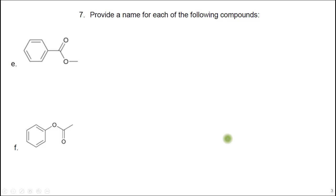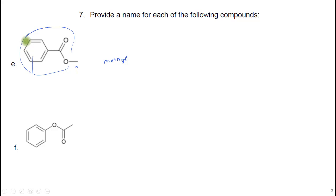Here we are naming some compounds — these are both esters. First, you want to name the R group on the other side of the oxygen. This is one carbon, so this is methyl. Then you name this as if it were a carboxylic acid — this would be benzoic acid. You drop the '-ic acid' and use '-ate,' so this is methyl benzoate.